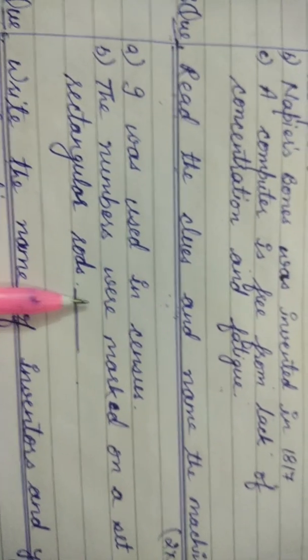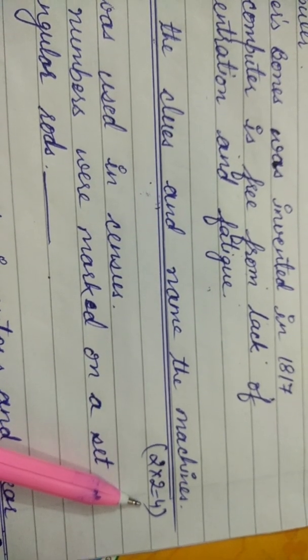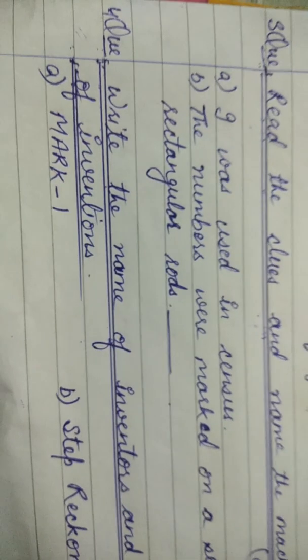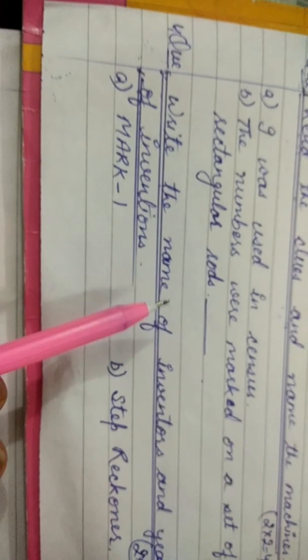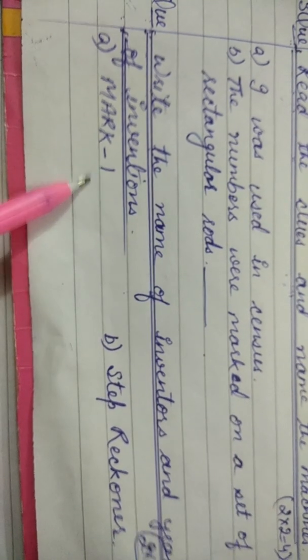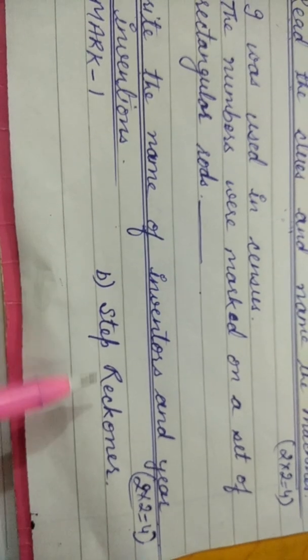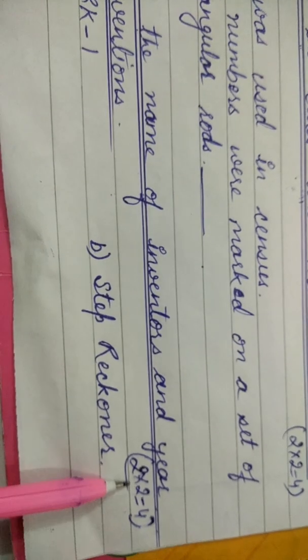Now question number four: Write the name of inventors and years of inventions. Number one: Mark 1. Number two: Step Reckoner. Total two questions, each carrying two marks, for a total of four marks.